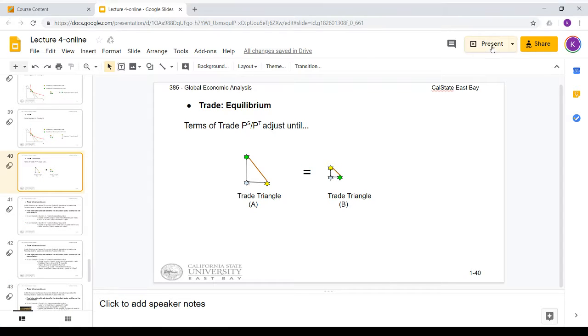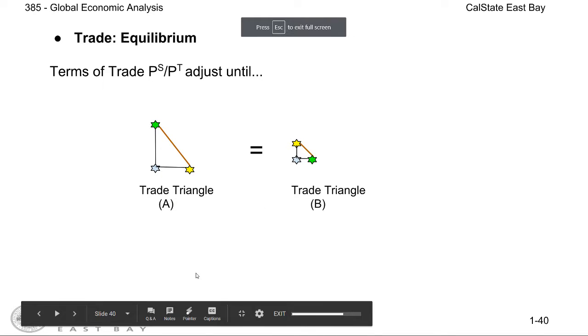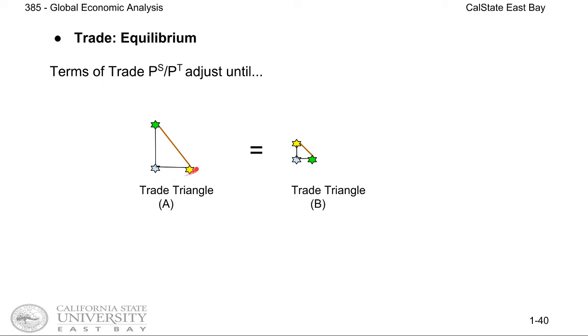Now we have derived the trade triangle for two countries, A and B. So this is how much soybean country A is exporting, and this is the amount of soybean country B is importing.